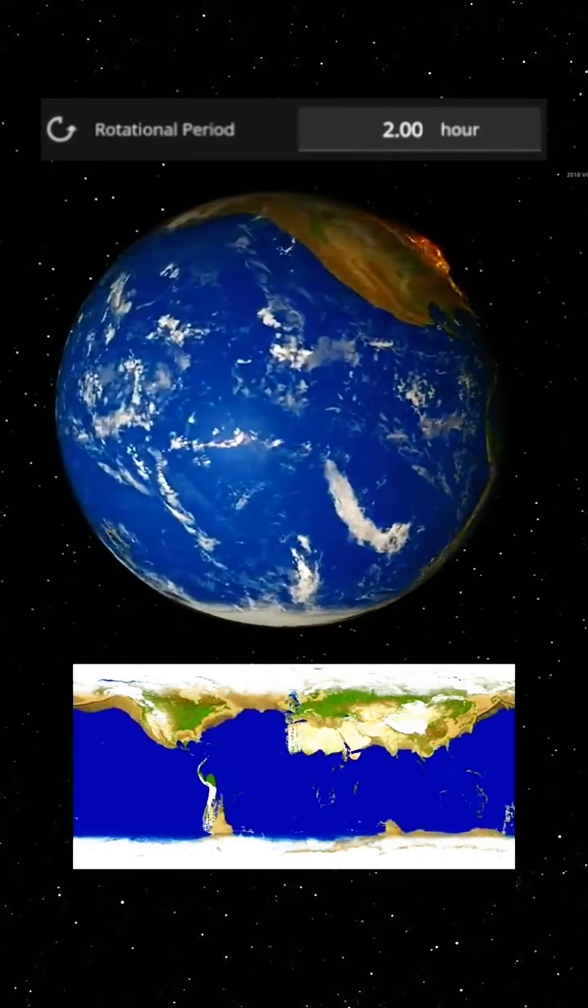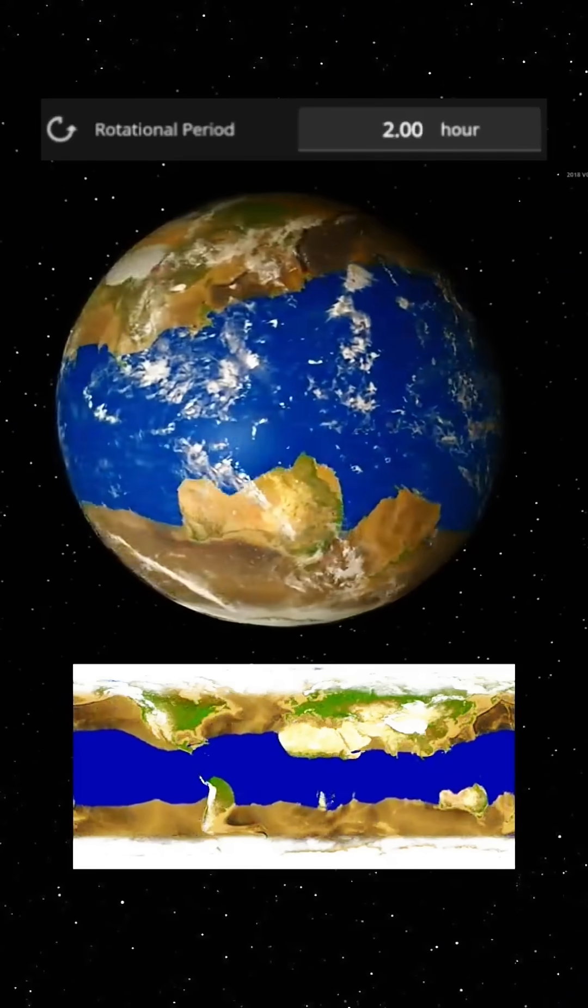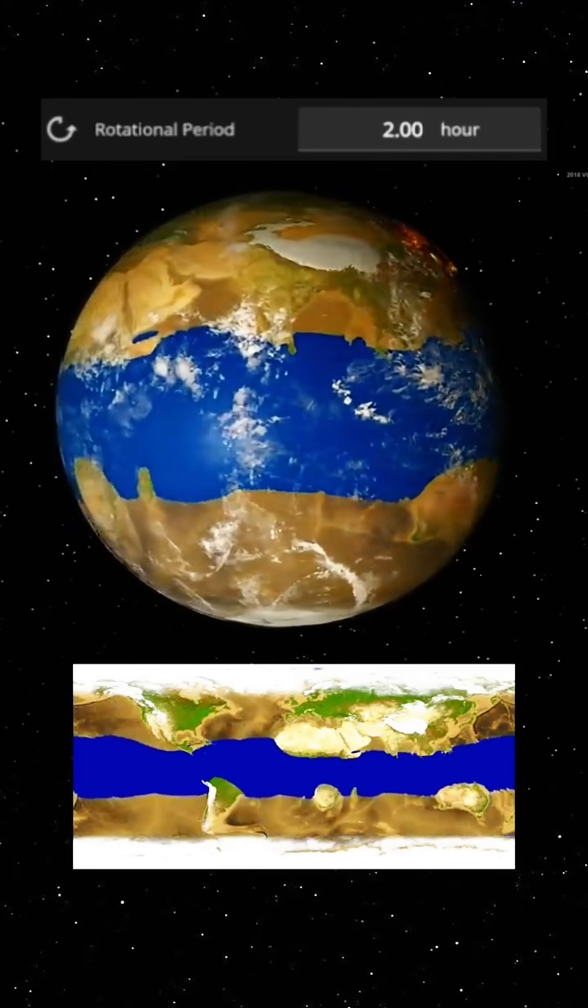With a 2-hour rotation, Earth would be spinning 12 times faster than it does now. As our planet spins faster, the consequences would be catastrophic.